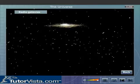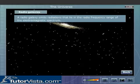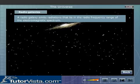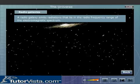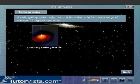Radio galaxies. A radio galaxy emits radiations that lie in the radio frequency range of the electromagnetic spectrum. Radio galaxies are of two types: Ordinary radio galaxies and Quasars.